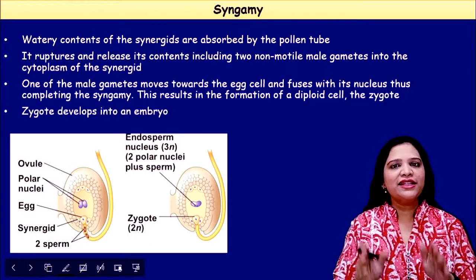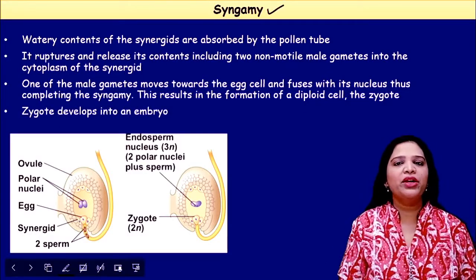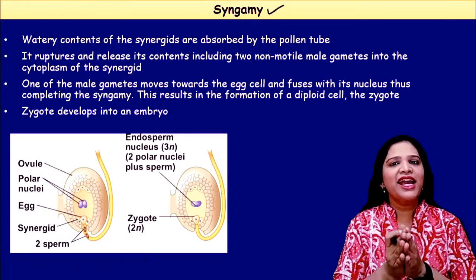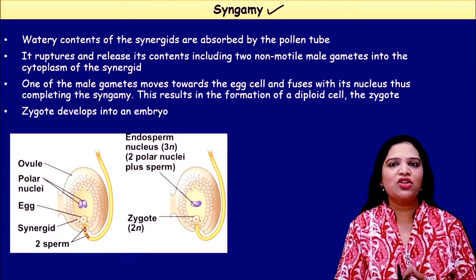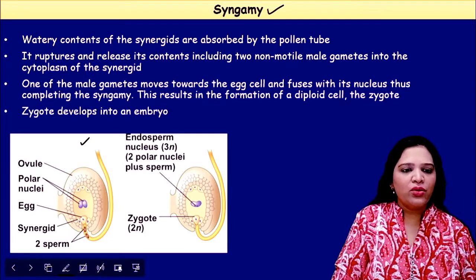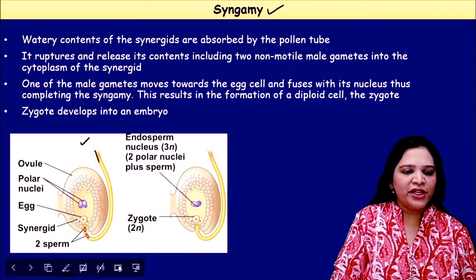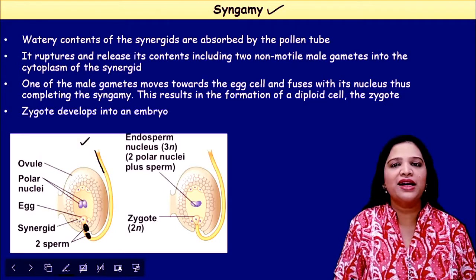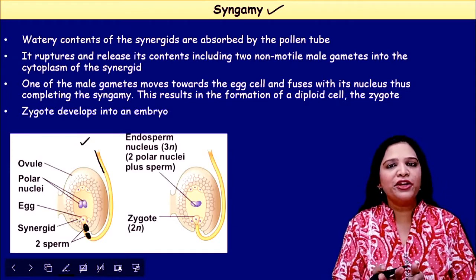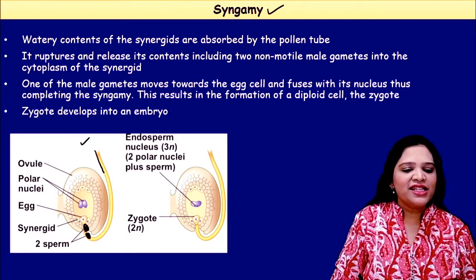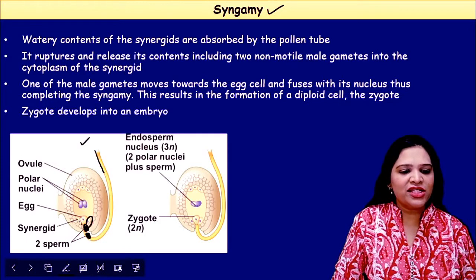Let us review the first event — syngamy. The fusion of the egg cell with the male gamete is called syngamy. The pollen tube brings two male gametes; the first gamete fuses with the egg cell and forms a zygote, which is 2n. The pollen tube enters via the synergid cell, carrying two sperm cells.